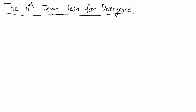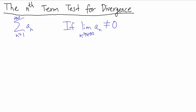It's also very important to remember how this test works. If we have a series, the sum from n equals 1 to positive infinity of a sub n, and we want to test this for convergence or divergence, the nth term test for divergence says: if the limit as n goes to positive infinity of the sequence a sub n does not equal 0, then the series diverges.